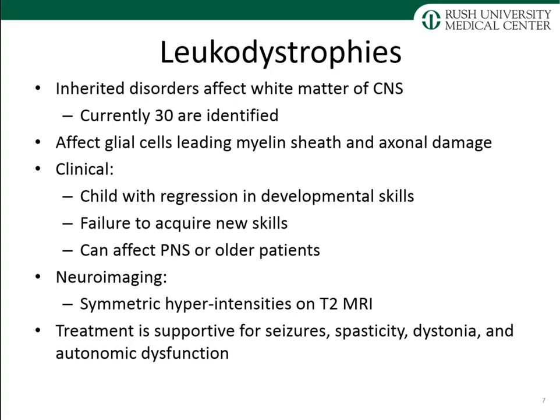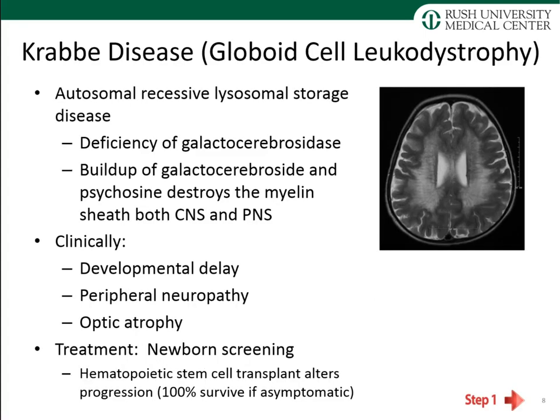Leukodystrophies are inherited disorders affecting the white matter of the CNS, with approximately 30 now identified. They affect glial cells and lead to myelin sheath and axonal damage. Clinically, you typically identify a leukodystrophy in a child with regression in developmental skills or failure to acquire new skills, though some affect the peripheral nervous system or present in older patients. Neuroimaging shows symmetric hyperintensities on T2 MRI. Treatment is supportive, addressing seizures, spasticity, dystonia, and autonomic dysfunction.